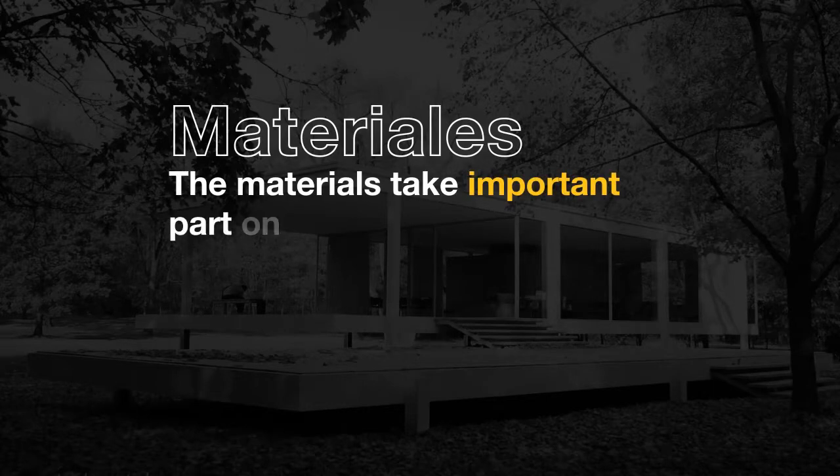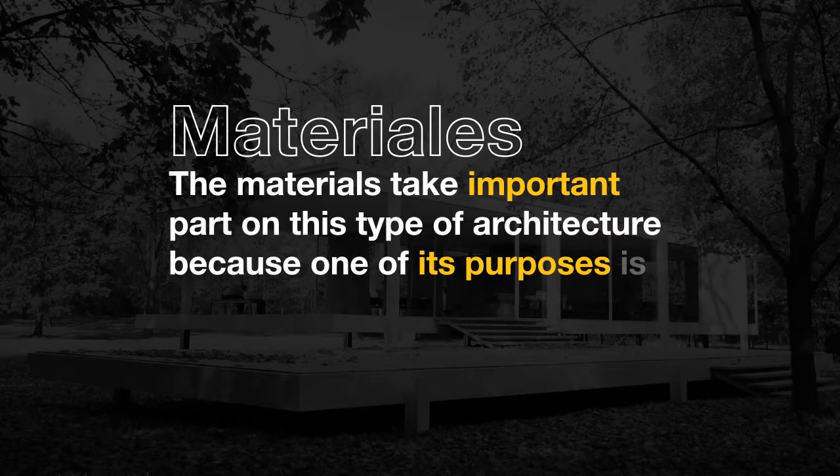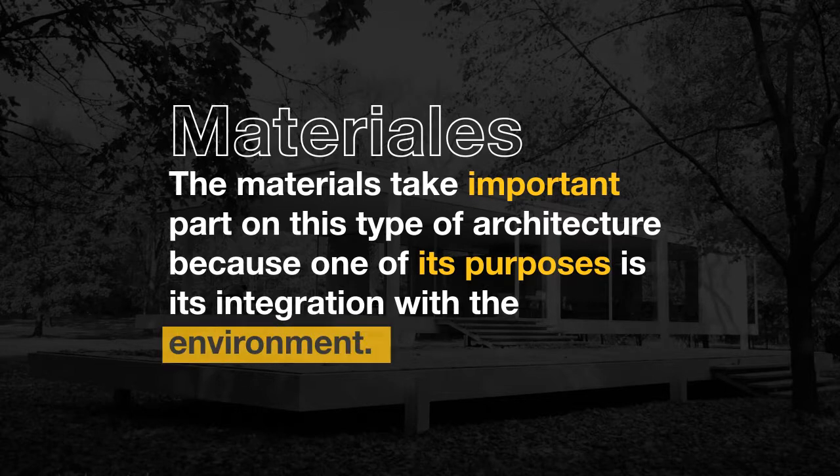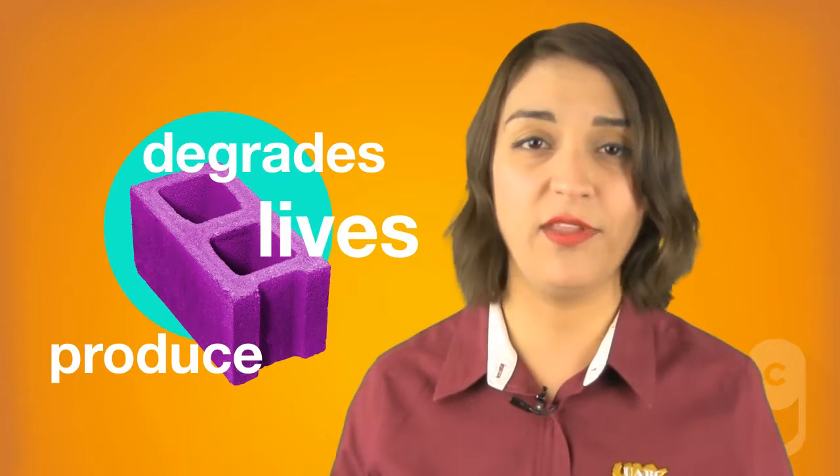Materials take an important part of this type of architecture because one of its purposes is the integration with the environment. The election of materials is taken into account from its disposition, behavior and complete life cycle. From the economics to the environmental, it is important to know the life of a material from its origin — that is to say, where it is produced, how it lives and how it degrades to become part of nature again.